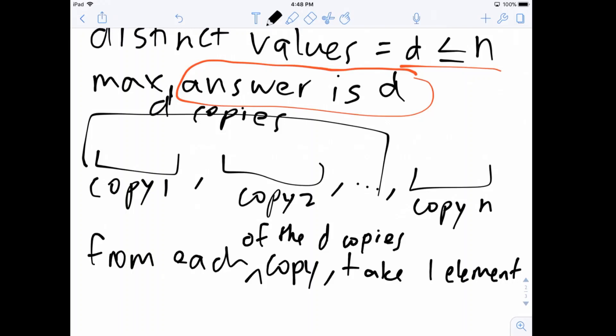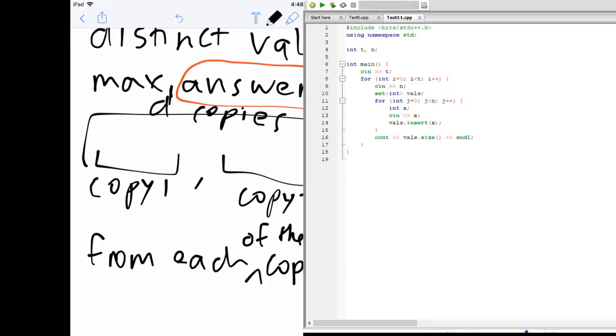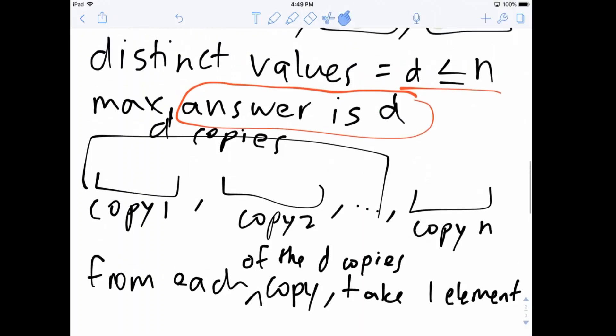Okay. Let's consider what the code looks like for this problem. So we read in the number of test cases. For each test case, we read n, which is the number of values. Now what we want to output is D, which is the number of distinct values. You can see from up here, the distinct values is D and that's the answer.